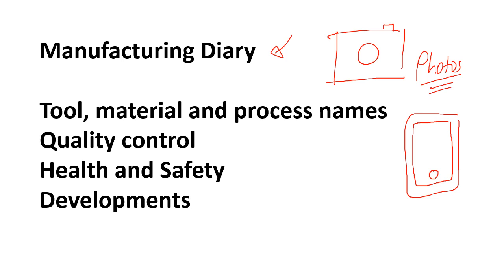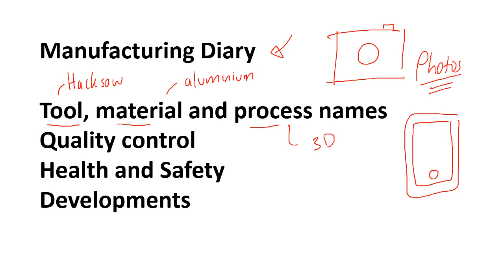The exam board can challenge us if they say, has this student actually made this product? So you can gain marks in this section for naming specific tools, materials, and process names. For example, you might say you used a hacksaw to cut aluminium rather than just saying metal. You might say 3D printing or laser cutting. Naming those specific things is going to get you more marks.